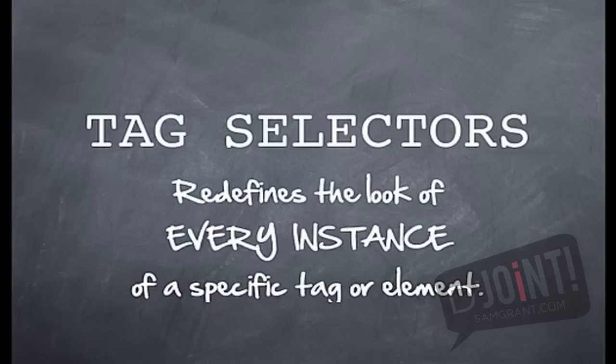That means that every instance of a paragraph, every instance of a particular heading tag, every instance of an anchor, any one of the individual tags that exist in the HTML document will be affected by the changes in the tag selector. So this is very universal and all you have to do is to remember exactly what the tags are and how you want them to behave. And you can write the CSS for it.